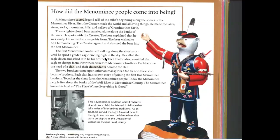How did the Menominee people come into being? A Menominee sacred legend tells of the tribe's beginning along the shores of the Menominee River. First, the Creator made the world and all living things. He made the lakes, rivers, rocks, mountains, hills, and valleys of Grandmother Earth. Then, a light-colored bear traveled along the banks of the river. He spoke with the Creator. The Bear explained that he was lonely and wanted to change his form. The Bear wished to be a human being. The Creator agreed and changed the Bear into the First Menominee.